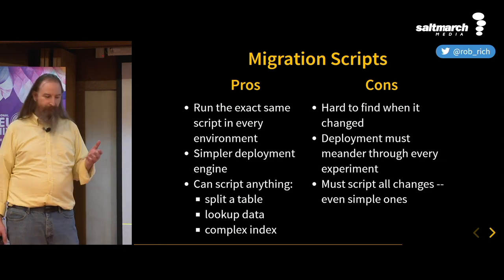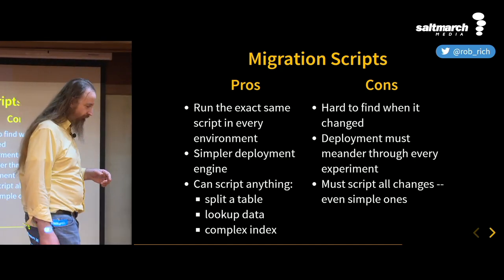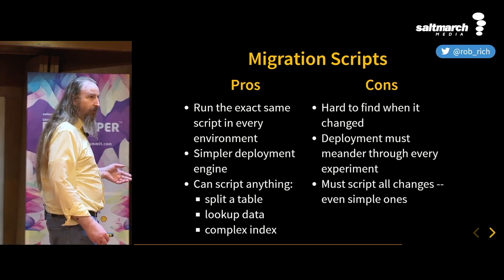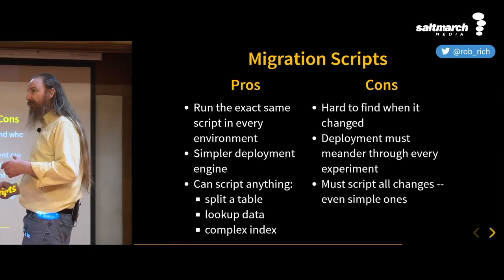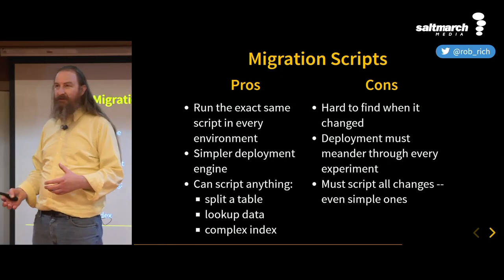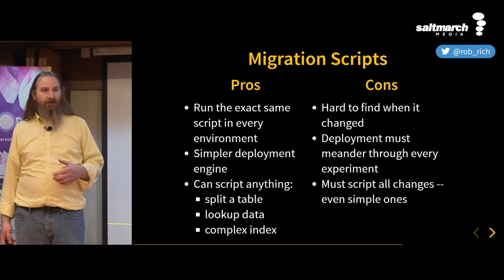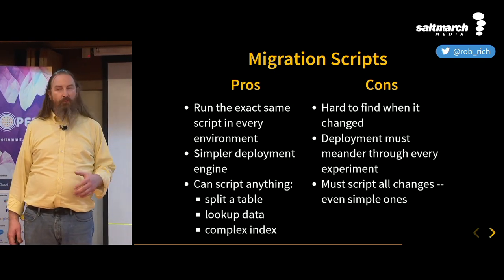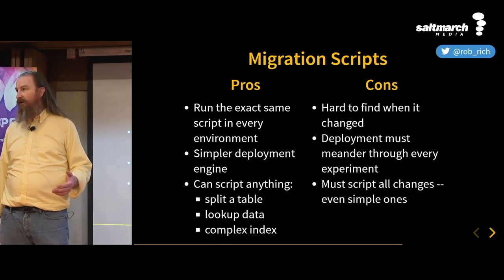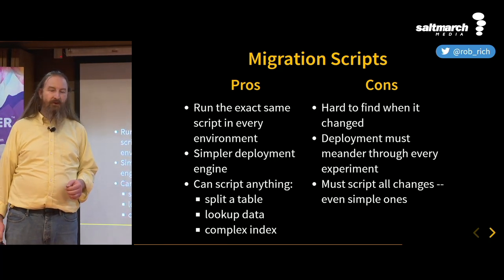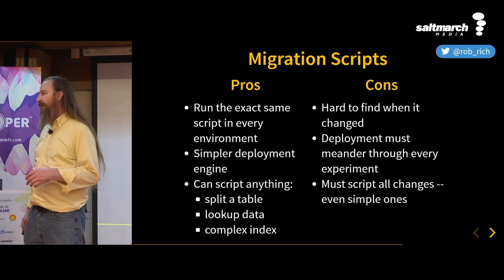We're taking the path that the developer took — I created a column, renamed it, renamed it back, threw away the table, created a new one. We're creating this meandering path and as we run these migration scripts, we need to take the exact same path. If these tables lock during this process and we're running multiple iterations, we may spend more time locking data than we need to. By comparison, with create scripts we could take the most direct path. Each approach has its pros and cons.